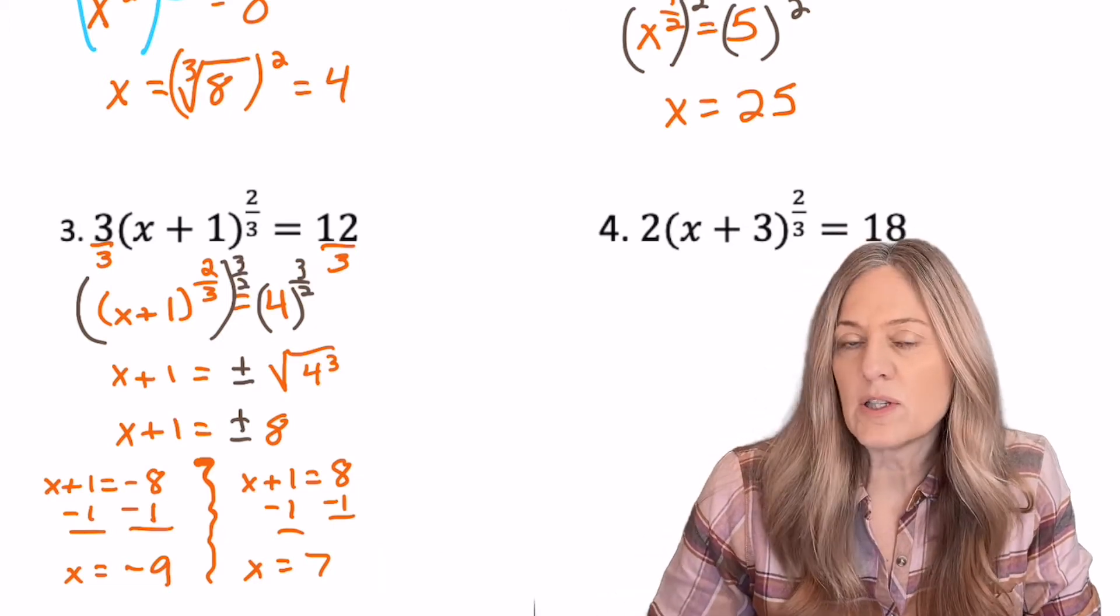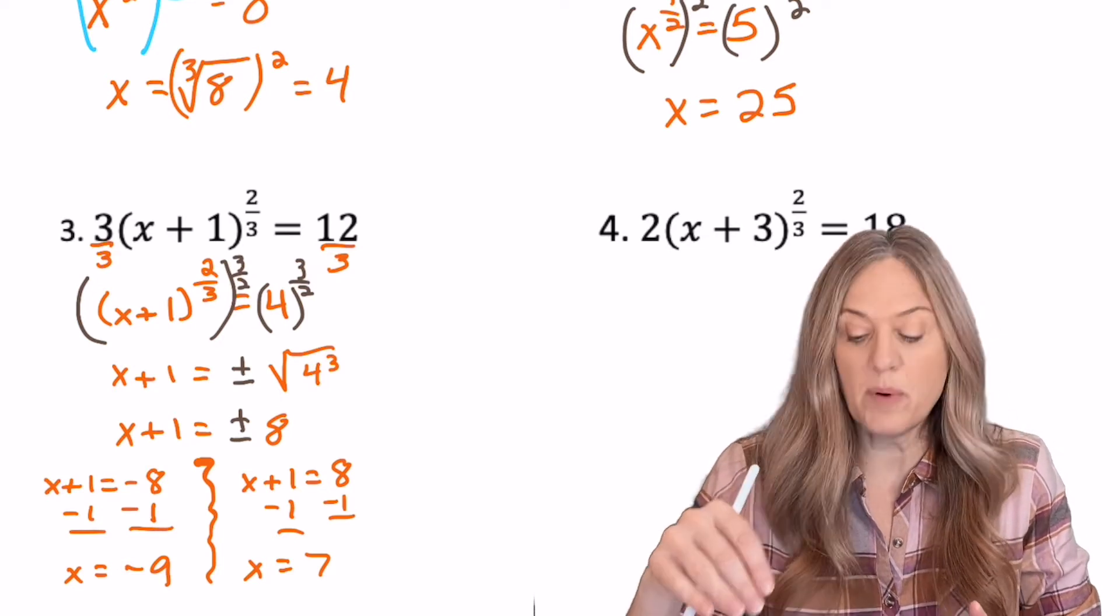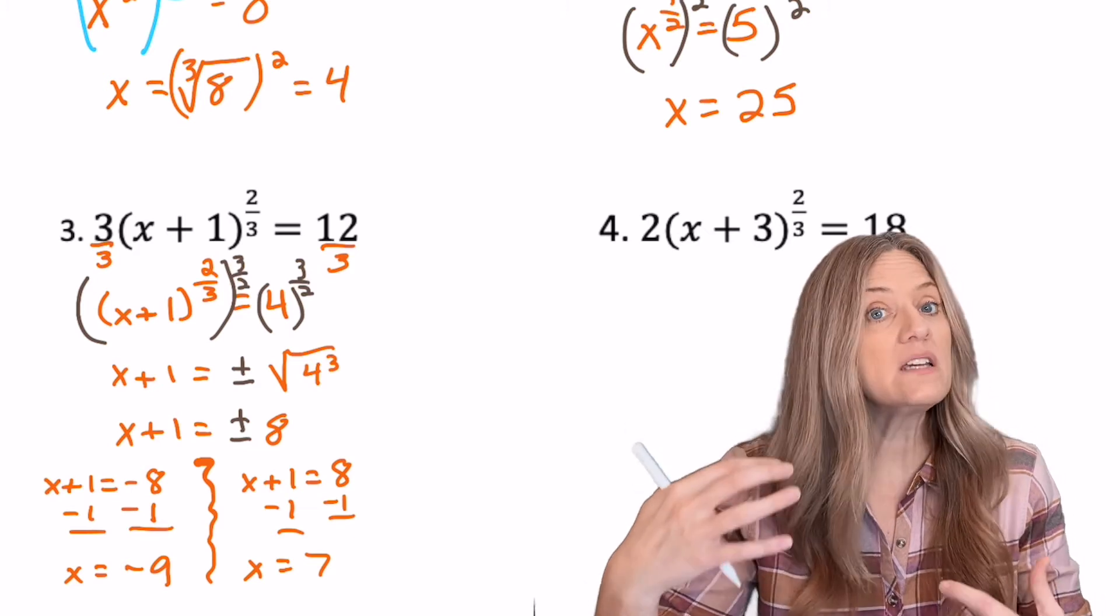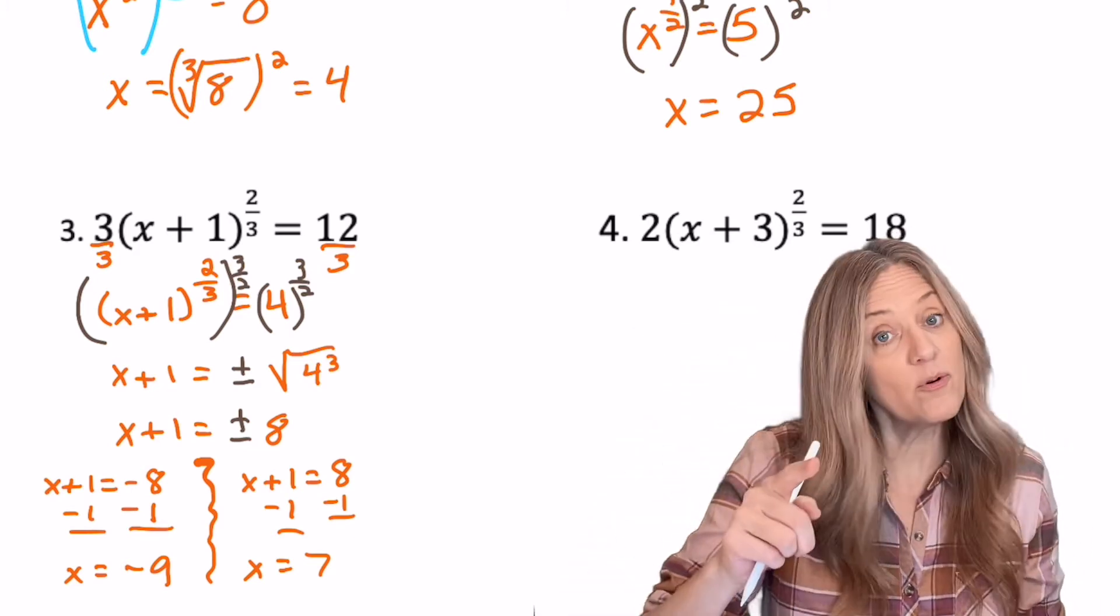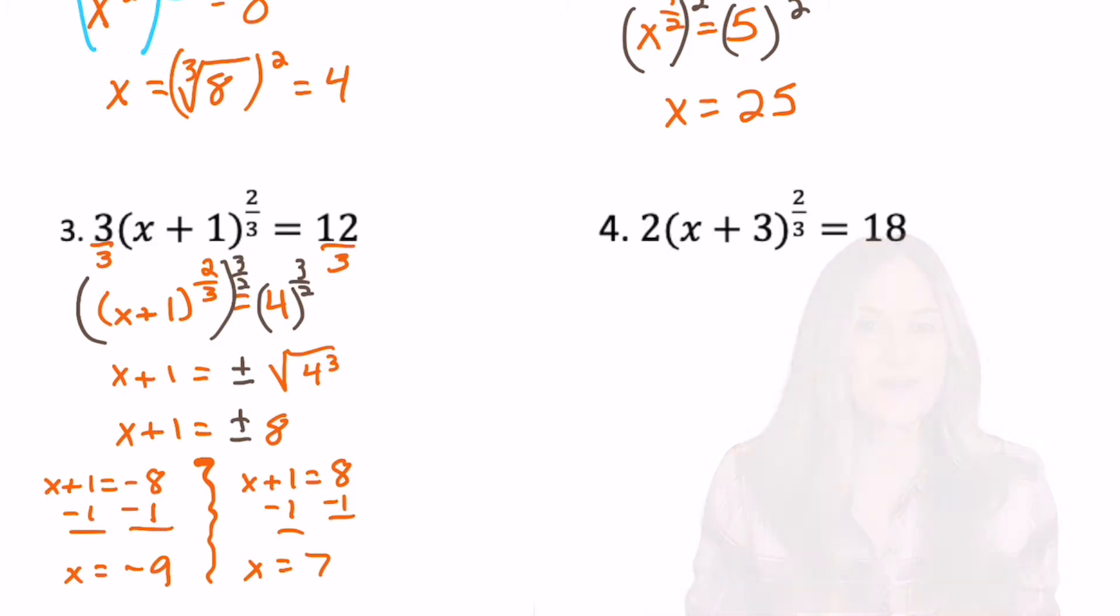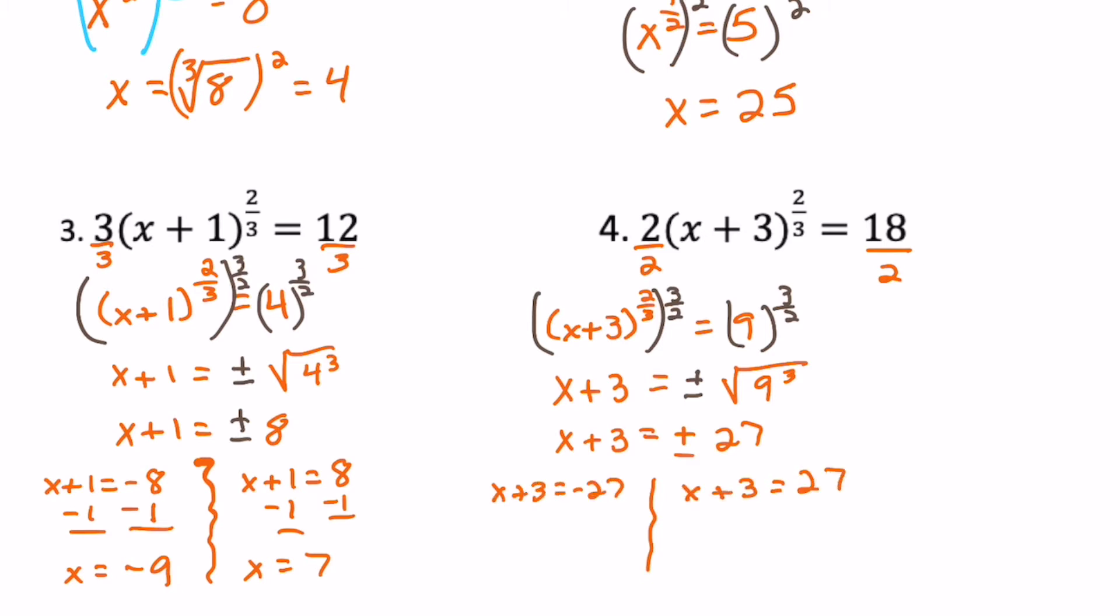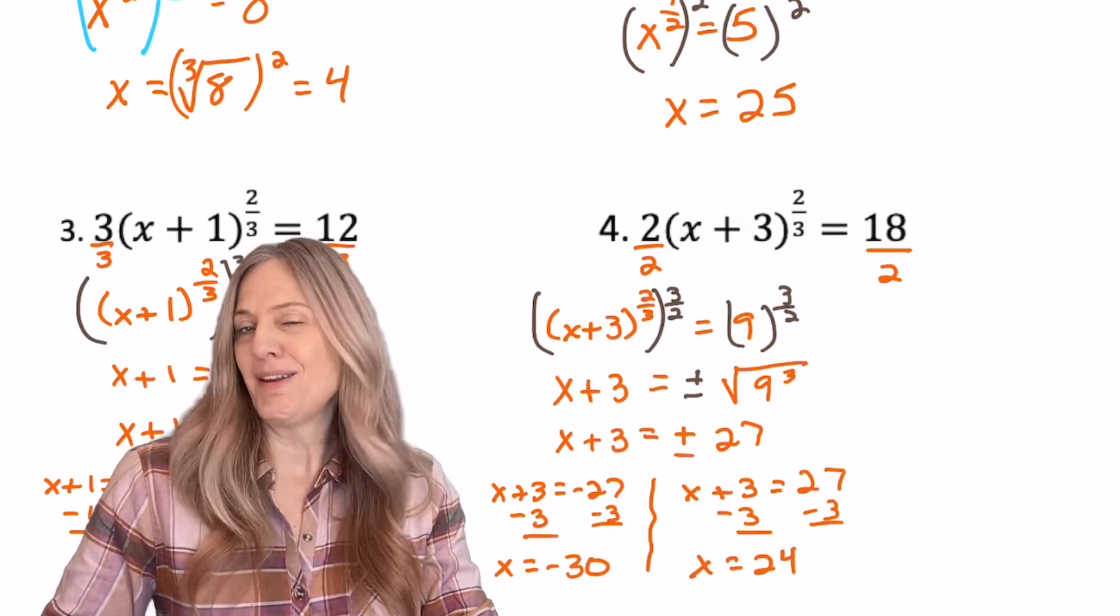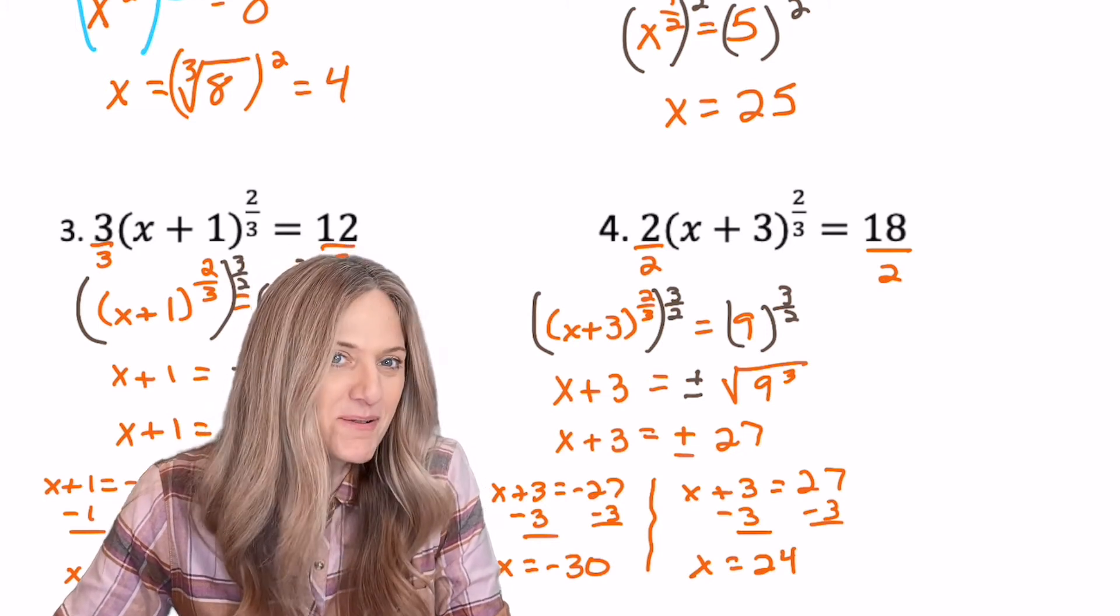Number four is similar, but I really want you to try this because this is the part that it's tricky. I get going too fast and I can forget it. So please do something to make yourselves remember this. So number four, try it and then come back and check with my answer. Well, did you get x equals negative 30 and x equals 24? Boom.